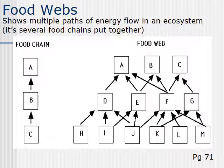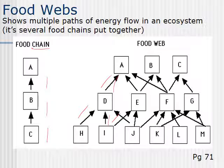Food webs are slightly different than food chains. A food chain is just a straight sequence going up, whereas a food web is a lot more complex — it's basically several food chains put together. Food webs are much more accurate ways of seeing interactions between organisms and where an organism's niche is in its ecosystem. Both models show how energy flows from the bottom up to the top.